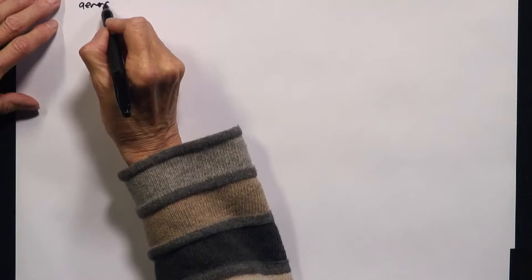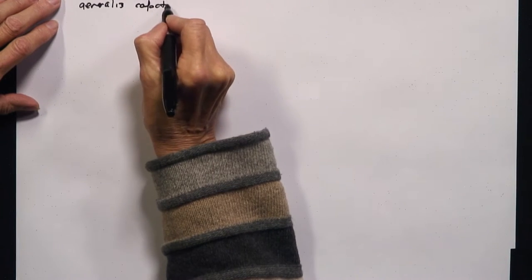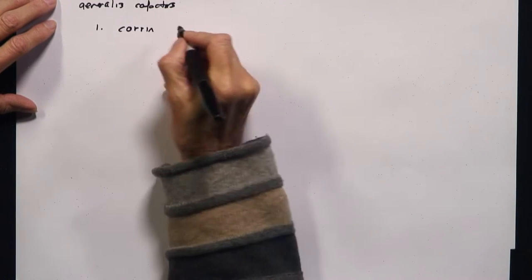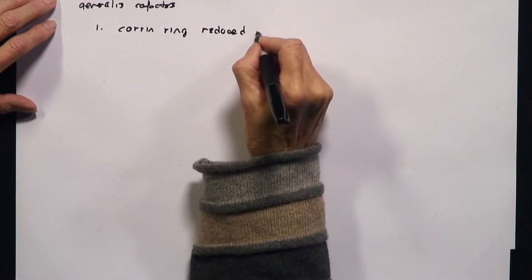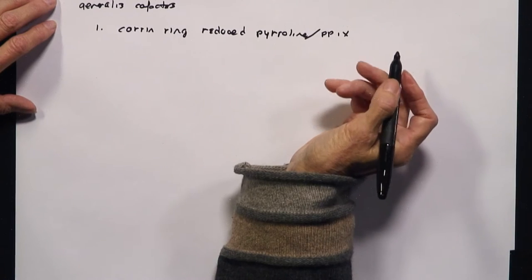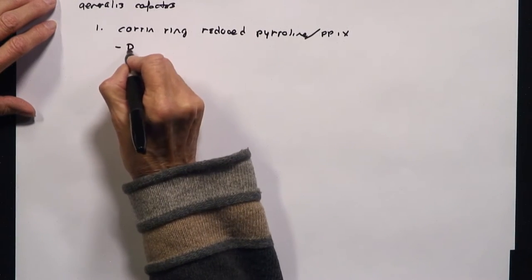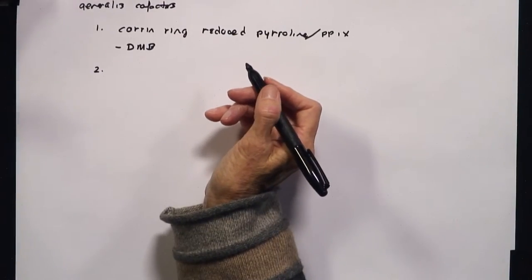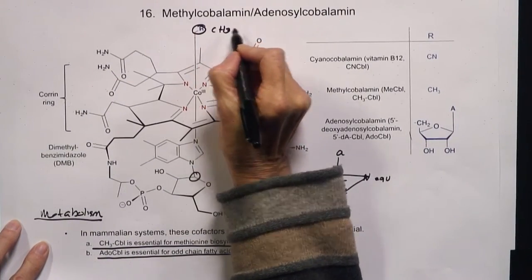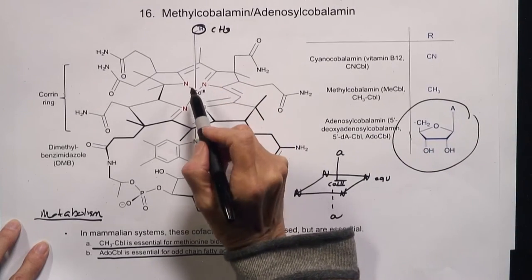A few generalizations about these cofactors. First, the corrin ring is much more reduced than the pyrrole ring that you see in protoporphyrin 9, which you've seen in hemoglobin. Second, you have this unusual dimethylbenzimidazole axial ligand, which you see nowhere else in cofactor chemistry. The most amazing thing is that if you look at the structure — whether this is a methyl group or the 5'-deoxyadenosine — you have a carbon-cobalt bond.